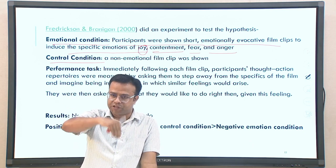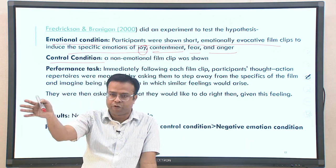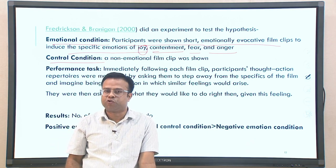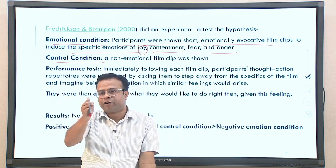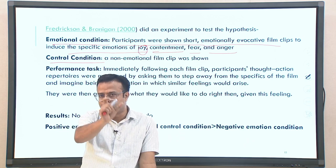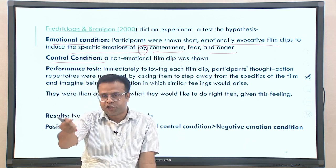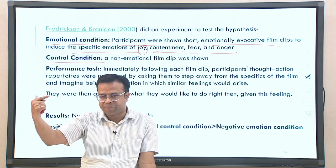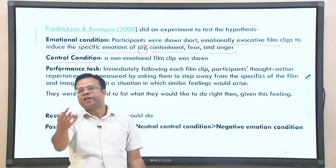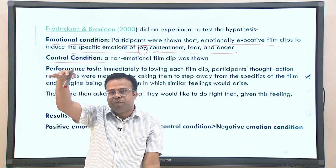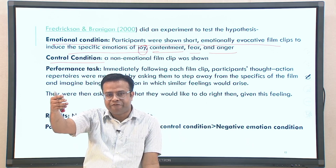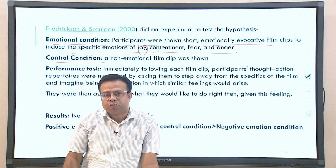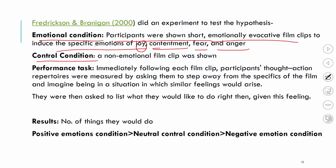Immediately after each clip, participants' thought-action repertoires were measured. They were asked to step away from the film scene and imagine being in a situation where similar feelings arise. For different conditions — joy, contentment, fear, anger — participants were asked to list what they would do when such an emotion arises in their life, given that the emotion was already induced in them.